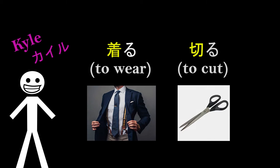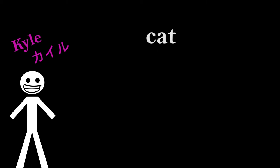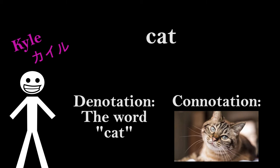But Kyle, what does that have to do with semiotics? I'm glad you asked. Take this example. The word you see on the screen is nothing more than a word on its own, signifying the denotation. The connotation is the picture that popped into your head when you saw it. This is an example of first level signification, or the physical word spelled C-A-T, and the second level, which is the meaning derived from that combination of letters.